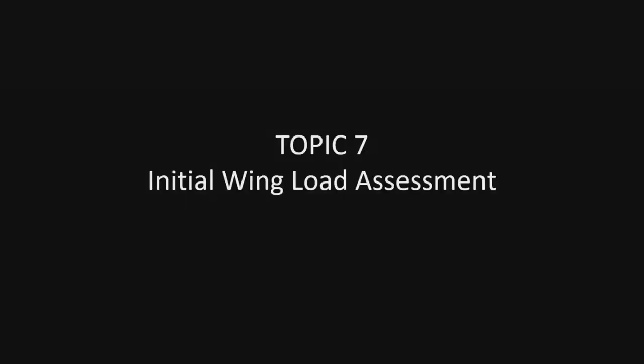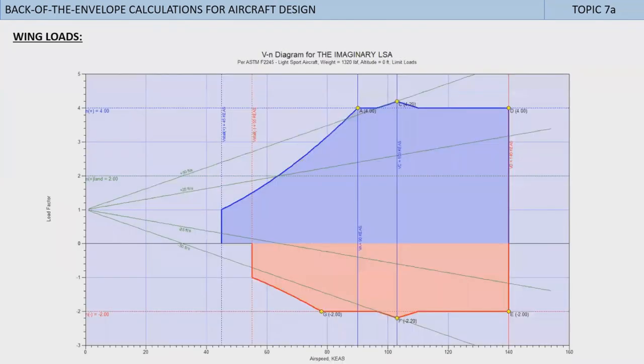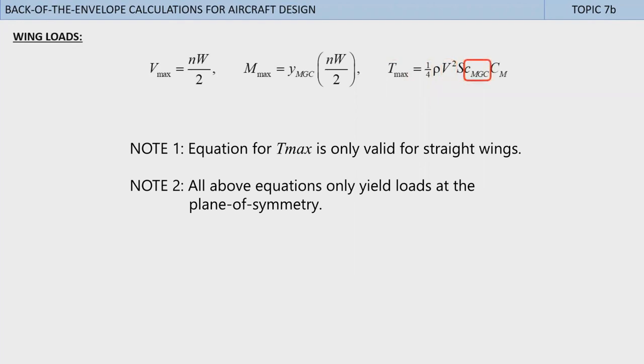Topic 7: Initial wing load assessment. This topic involves the back-of-the-envelope estimation of selected structural loads. First consider this V-n diagram for our LSA. Here we can see that the highest load factor is due to a 50 feet per second gust load, which returns a load factor of 4.2 at the design cruising speed of 103 kTAS. Let's use this information to take a stab at the maximum shear load, maximum bending moment, and maximum torsion of the wing. All are acting at the plane of symmetry. To do this, we use these simple back-of-the-envelope calculations. These assume that the maximum shear is close to the load factor n times the design gross weight W of the airplane divided by 2. The maximum bending moment is close to the product of the maximum shear placed at the spanwise position of the mean geometric chord. Then we assume that the wing torsion is close to 1/4 times density times V squared times wing area times the mean geometric chord times the airfoil's pitching moment coefficient.